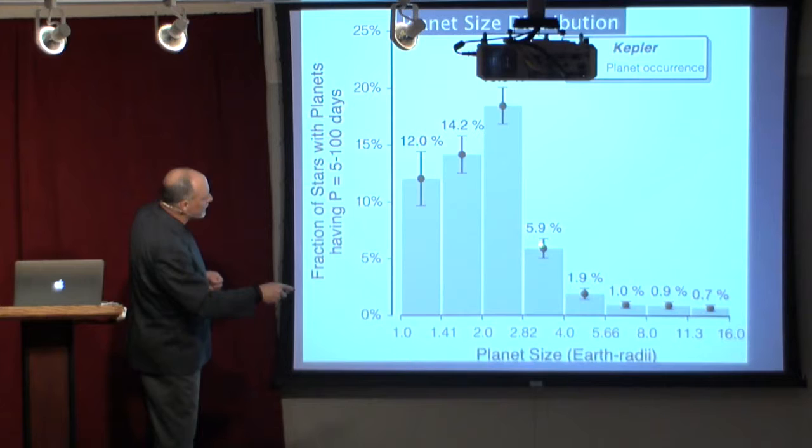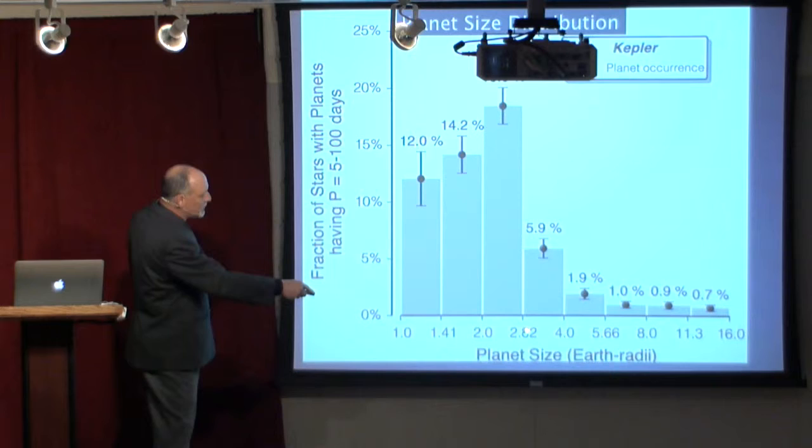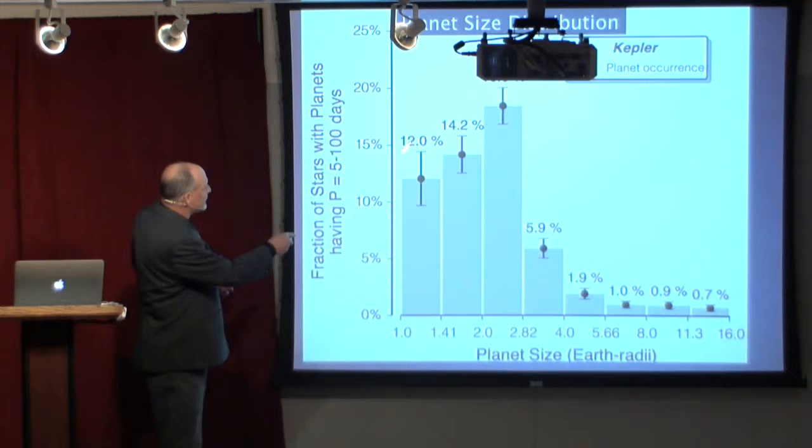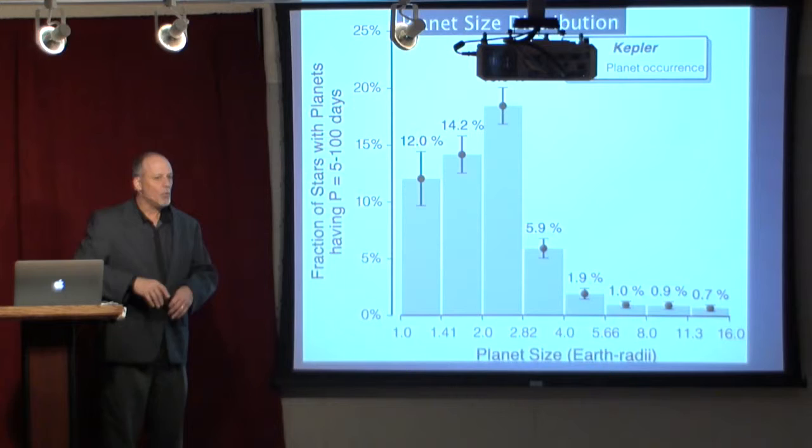But as you consider smaller and smaller planets, there's this domain in here between the size of the Earth and two and a half or so times the size of the Earth where there are lots of planets. The Milky Way galaxy is rich with planets approximately the size of our Earth.